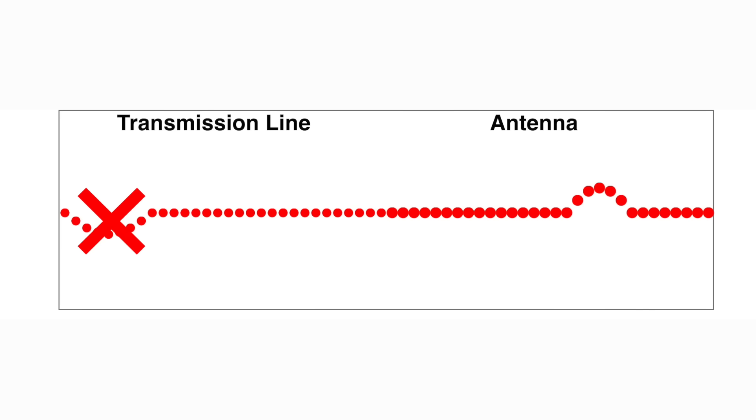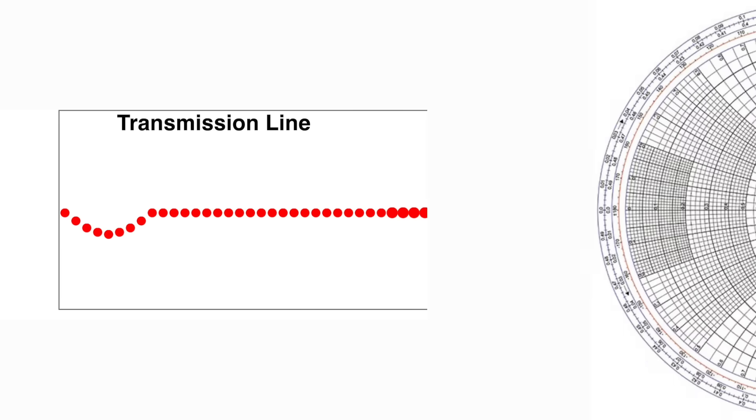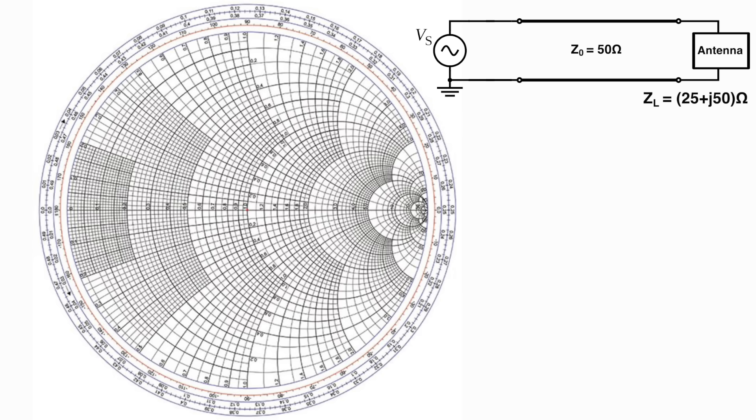We typically don't like those reflections. We want as much of the signal's power as possible to get to the antenna so it can be transmitted. And that's where the Smith chart comes in. This tells us the parameters we need to know, like how much voltage gets reflected versus how much is transmitted.